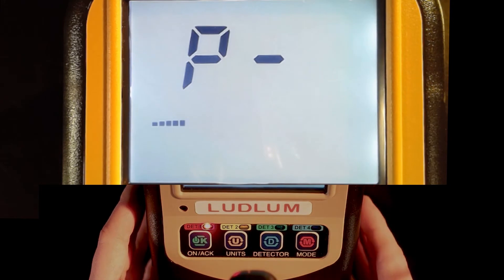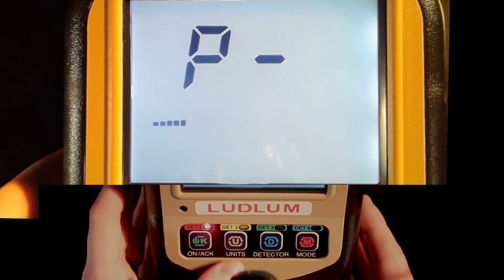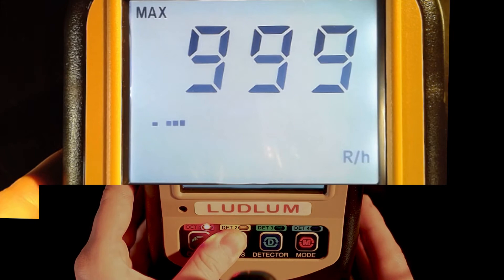Press the MODE button to go to page 2. Press the UNITS button three times to get to the alarm setting.